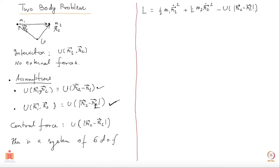Now we ask whether these are the best coordinates to describe the system. Our experience with several different systems before may immediately tell us that these are not the best coordinates. It would be wise to use the modulus of r2 minus r1 as one of the coordinates, and the other coordinate which will be good to use is the center of mass coordinate. We have come across this thing several times, so I will just write down the transformation.